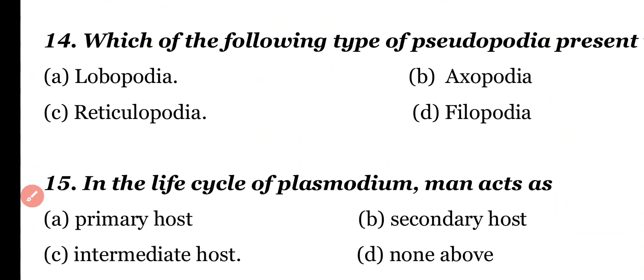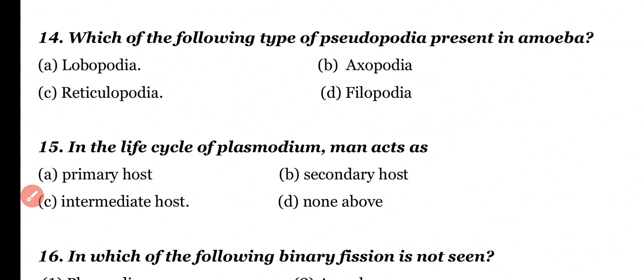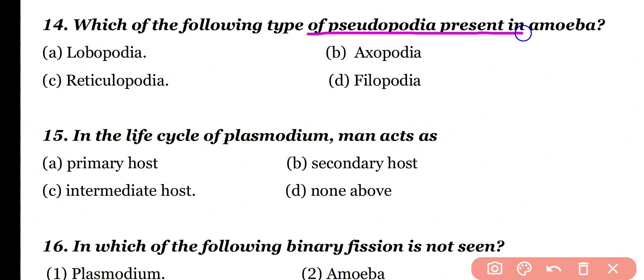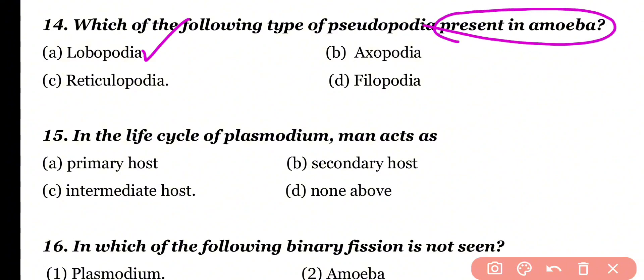Question number 14: Which of the following types of pseudopodia is present in Amoeba? Lobopodia, axopodia, reticulopodia, or filopodia? Correct answer is option A. Lobopodia is the type of pseudopodia present in Amoeba proteus.